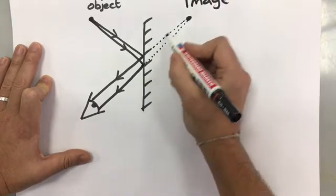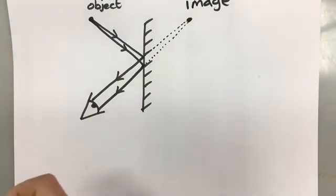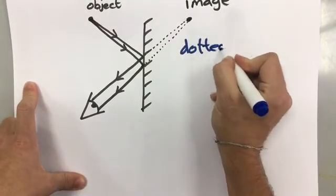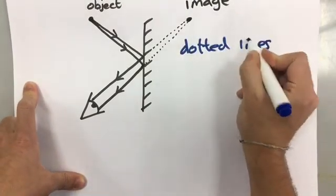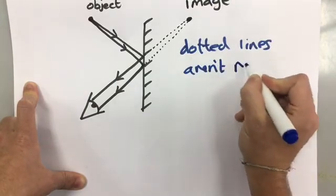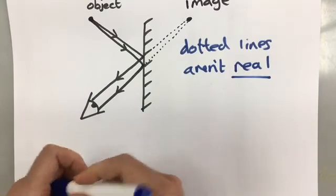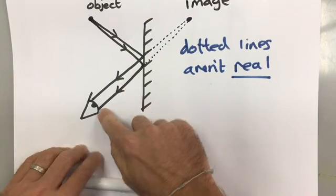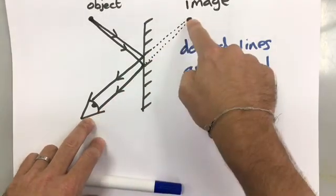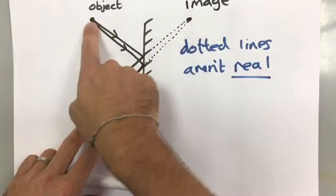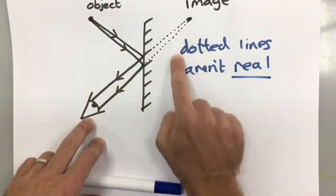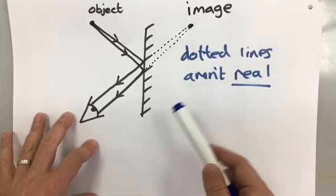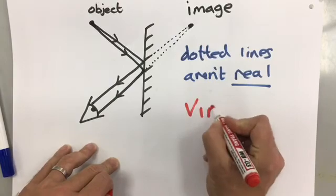That is where it looks like your object is, so we call that the image. Now the reason that these dotted lines are here and not solid lines is that dotted lines aren't real. The light doesn't really go through the mirror, it just looks like it does. So from our point of view over here, it looks like the object is here, but actually the object is over here, because these are not real rays of light. And remember, if an image is formed by something that's not a real ray of light, we say it's a virtual image.